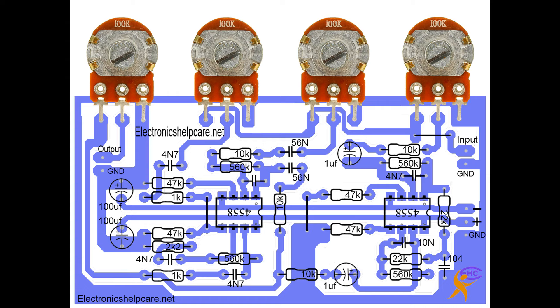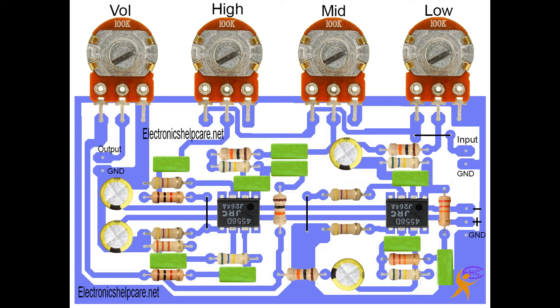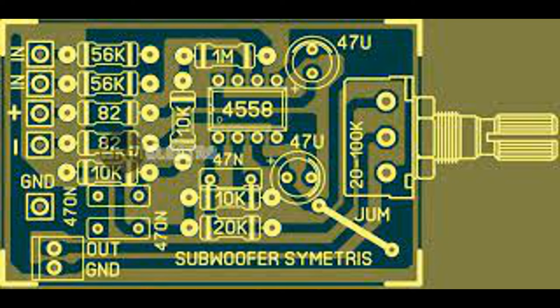2. High-Pass Filter (HPF) Design: Typically consists of a capacitor and resistor (RC) in series, with the resistor connected to the output. Functioning: At low frequencies, the capacitor behaves like an open circuit and blocks the signal. As the frequency increases, the impedance of the capacitor decreases, allowing higher frequency signals to pass through to the output. The cut-off frequency for an RC high-pass filter is also given by the same formula.